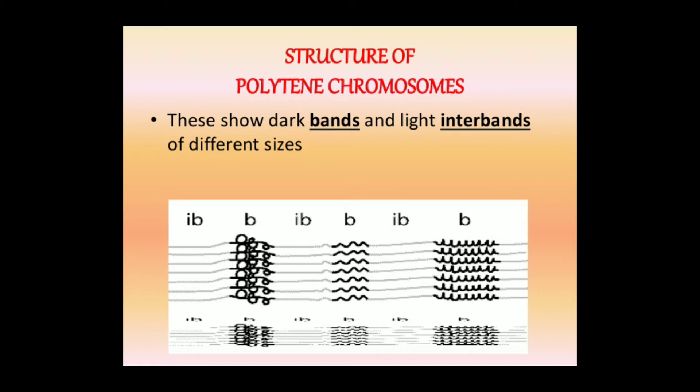Structure of polytene chromosomes: these show dark bands and light inter-bands of different sizes. The dark bands are represented by 'B'. In between the bands are inter-bands, which are light in color. The bands are of various sizes and have different shapes.